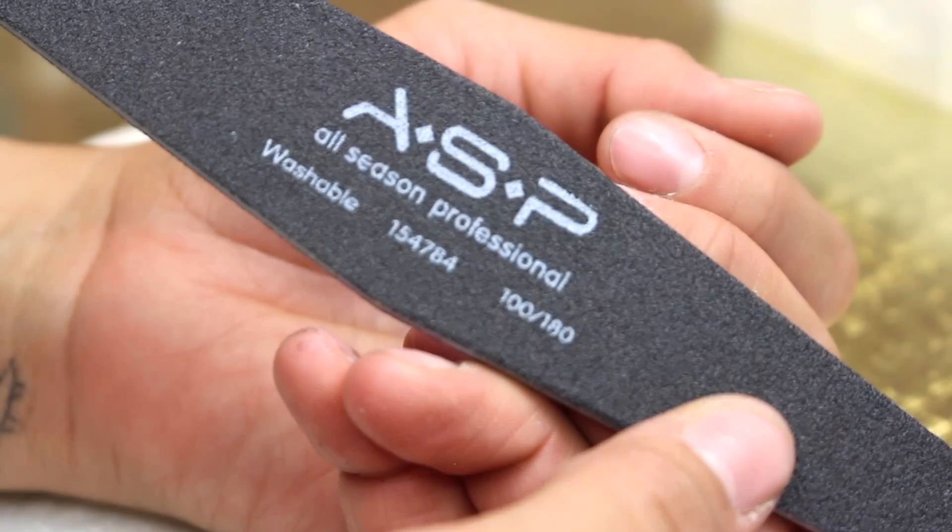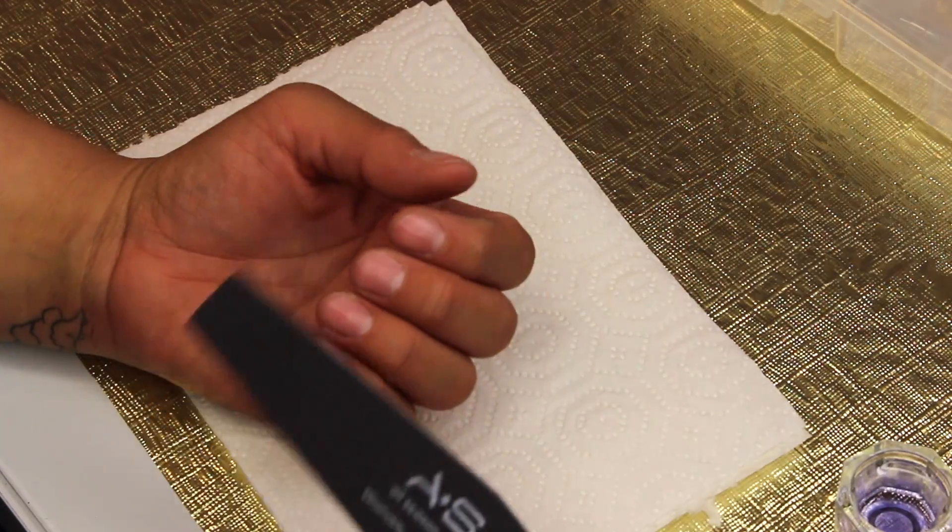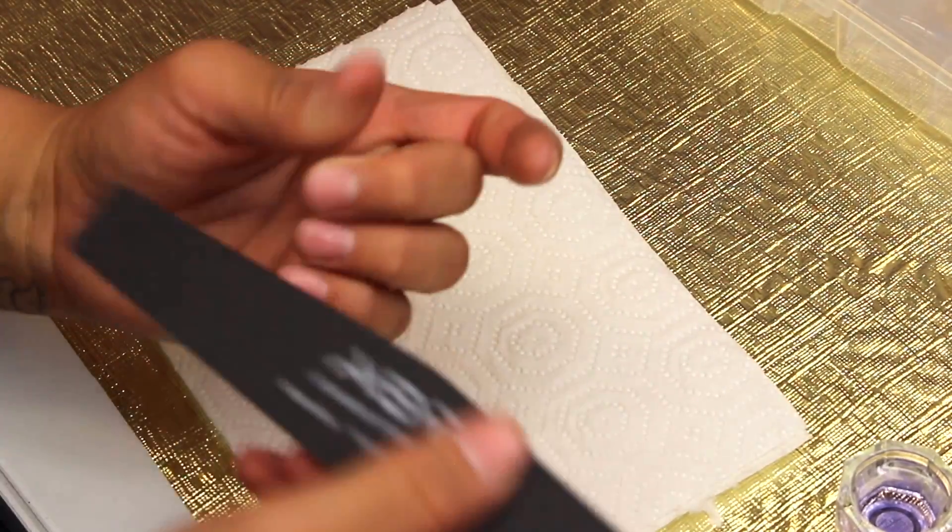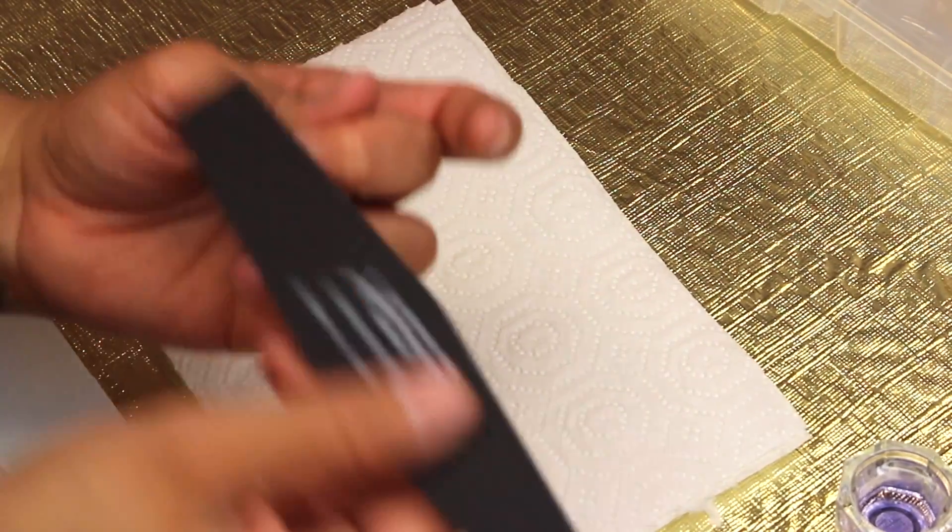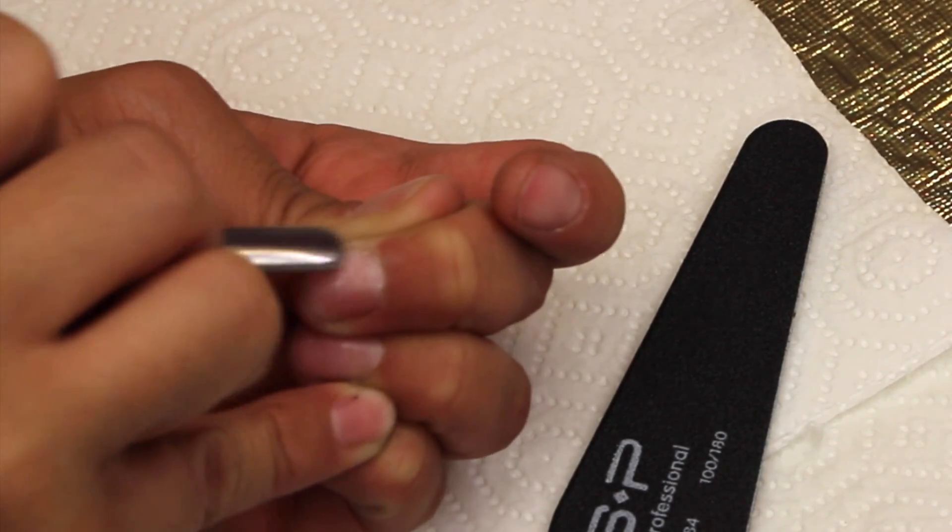So what you're going to need is a 100 to 180 grit file, and we're going to use this to file the surface of the natural nail to remove any shine, just to get it nice and prepped for acrylic. Then we're going to push away your cuticle, pushing it back and removing all the dead skin.